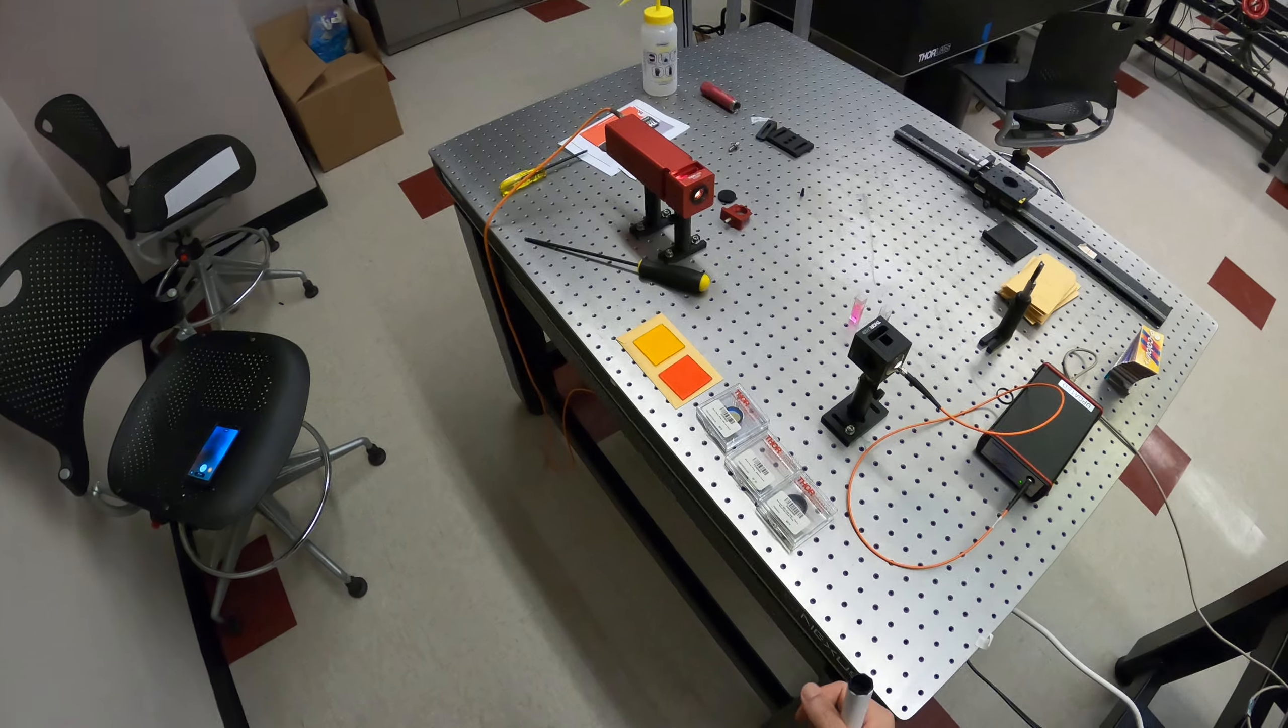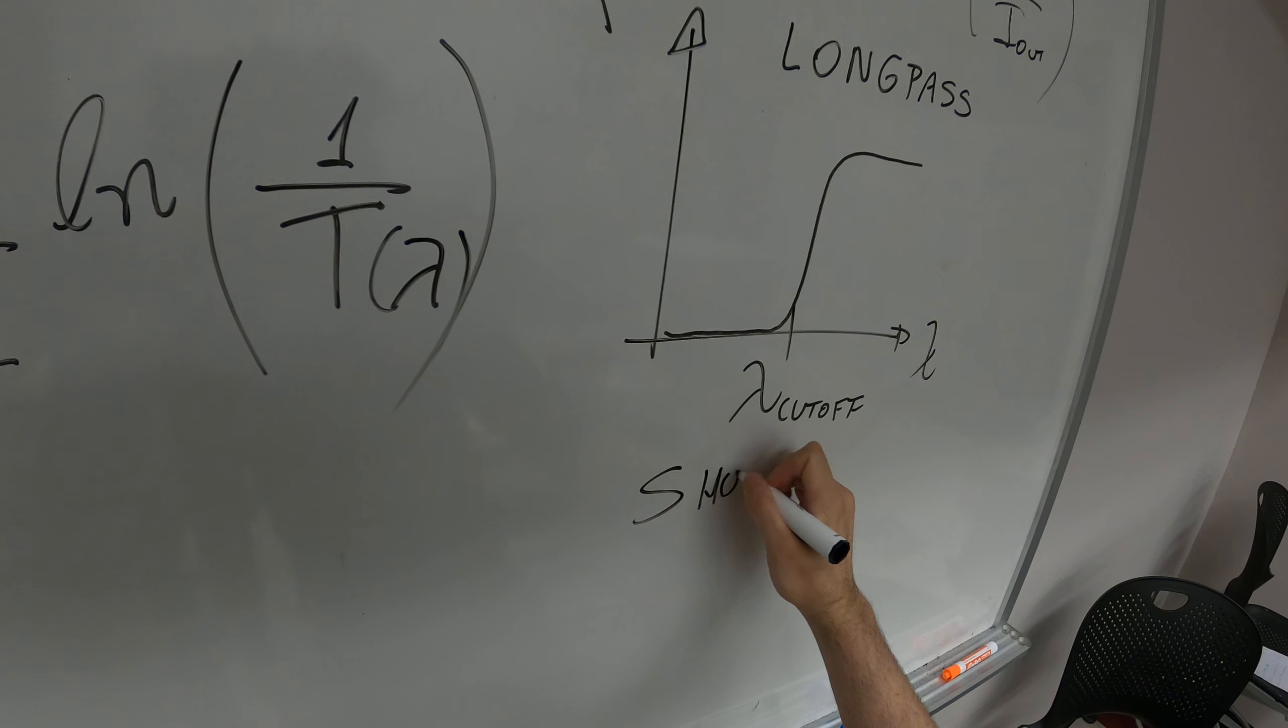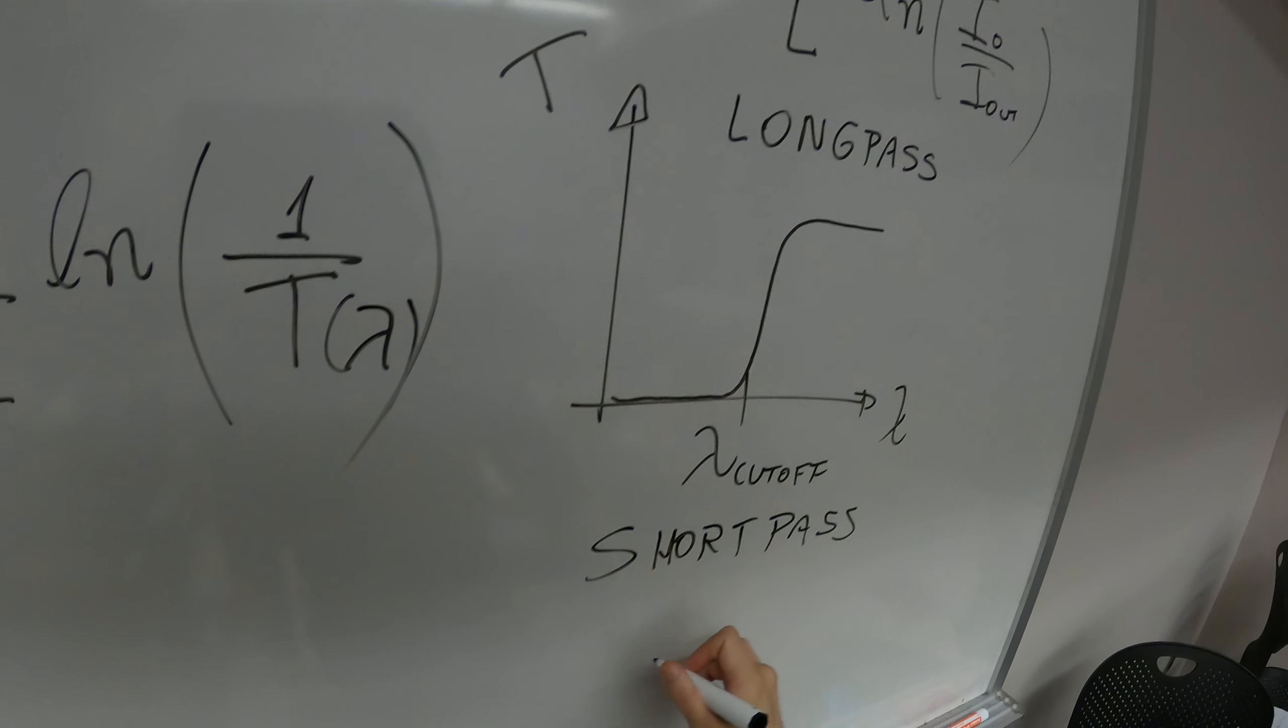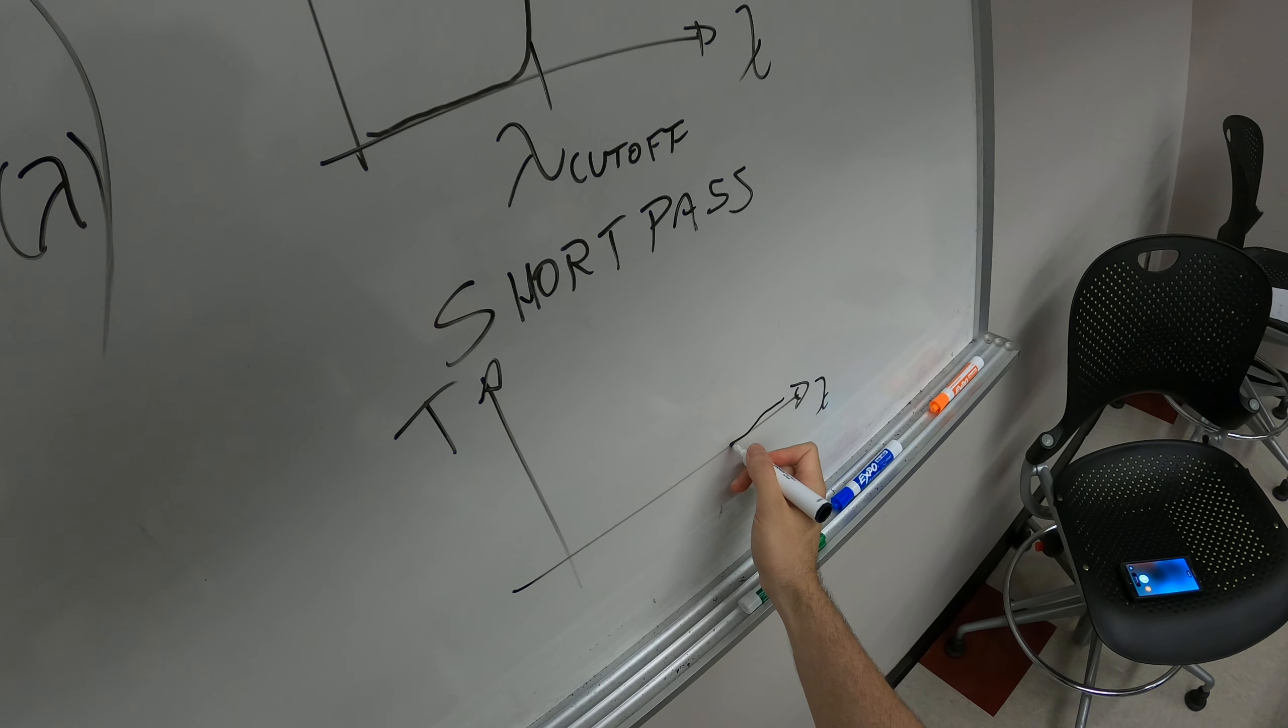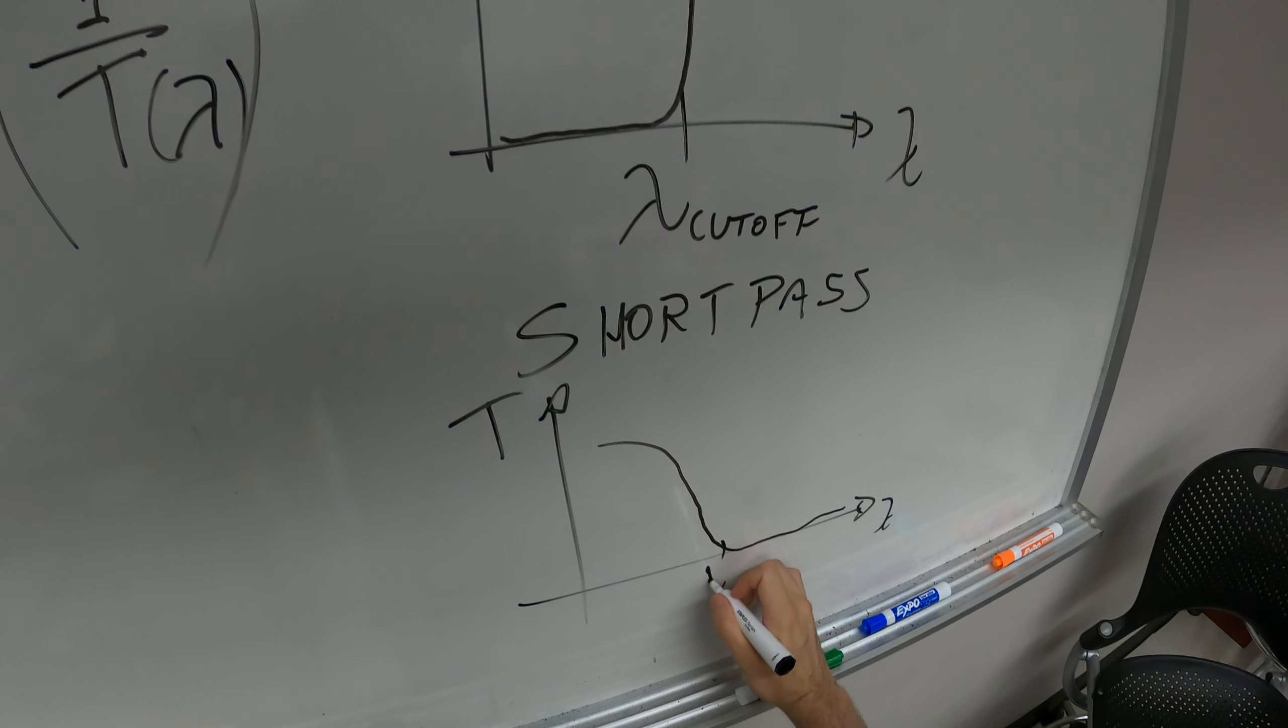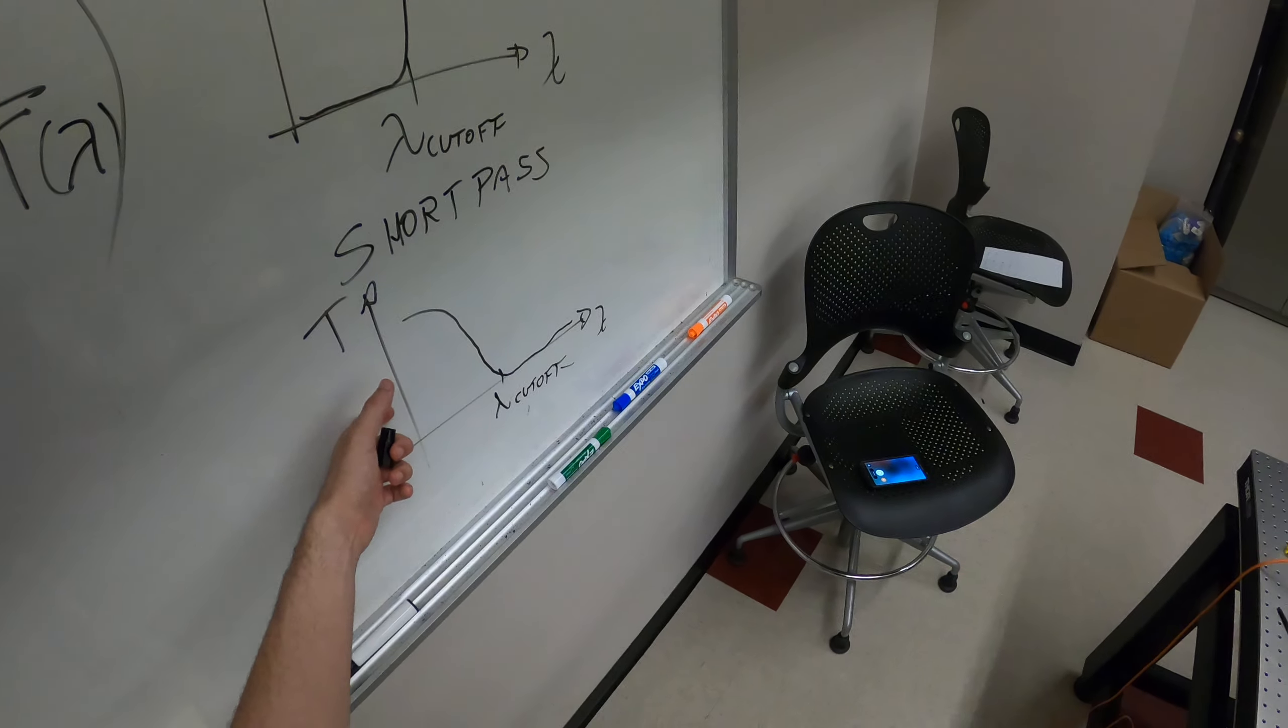The other filter we measured, it's called the short pass, which is the inverse of the long pass filter, in that it transmits only short wavelengths. The transmittance is zero, and after the cutoff, light is transmitted.